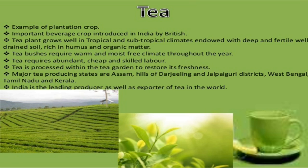Tea is a tropical and subtropical crop grown in deep, fertile, well-drained soil rich in humus and organic matter. Tea bushes require warm and moist frost-free climate throughout the year. Tea requires abundant, cheap and skilled labour. Tea is processed within the tea garden to retain its freshness. Major tea producing states are Assam, the hills of Darjeeling and Jalpaiguri districts in West Bengal, Tamil Nadu and Kerala. India is the leading producer as well as exporter of tea in the world.